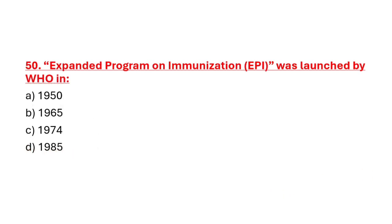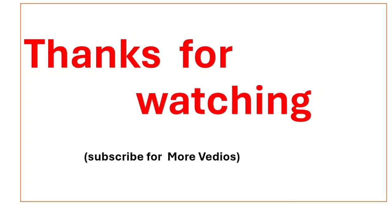Question 50: Expanded Program on Immunization was launched by WHO in. Option A: 1950. Option B: 1965. Option C: 1974. Option D: 1985. Correct answer is Option C: 1974. Thanks for watching. Subscribe for more videos.